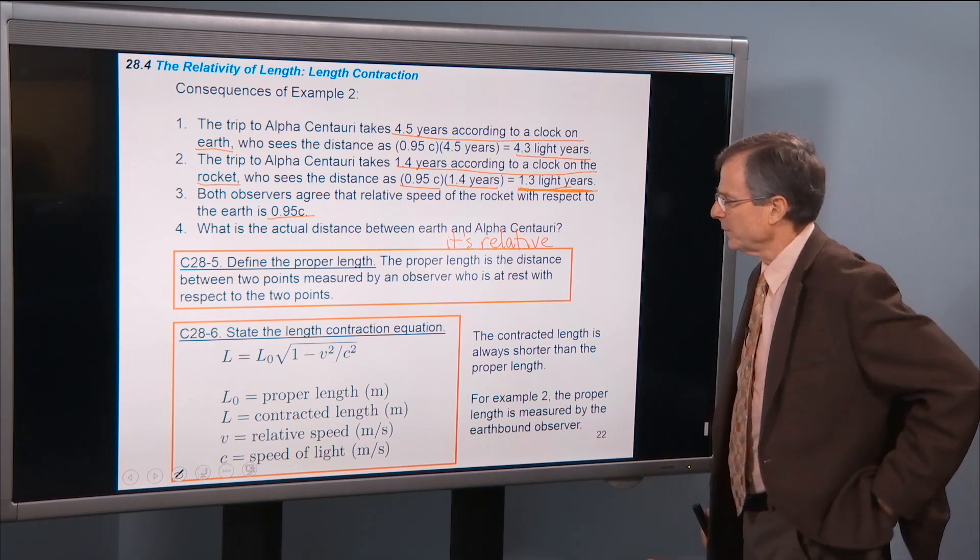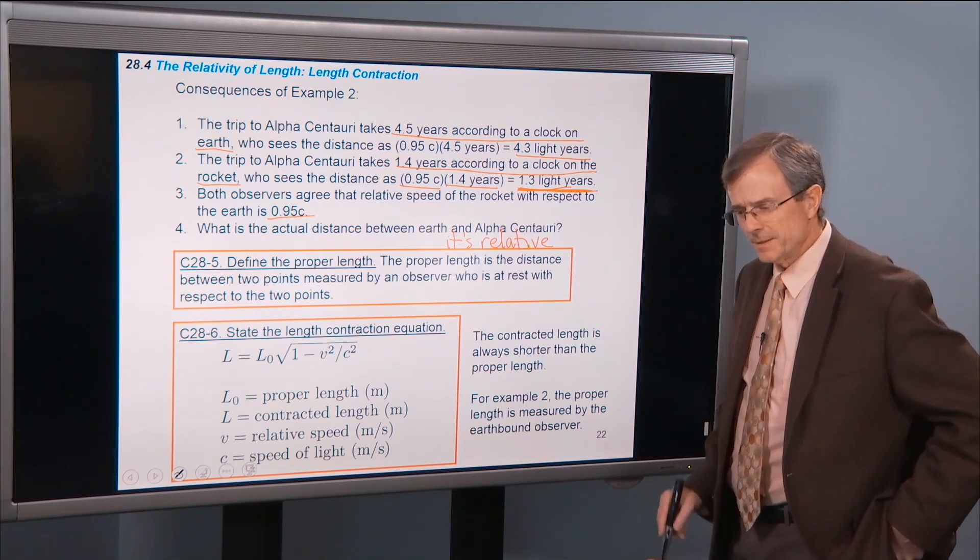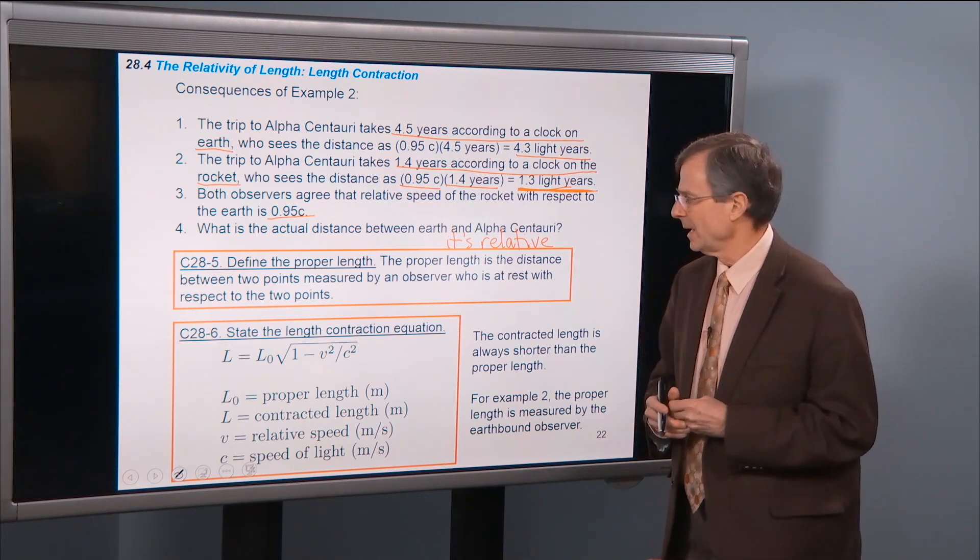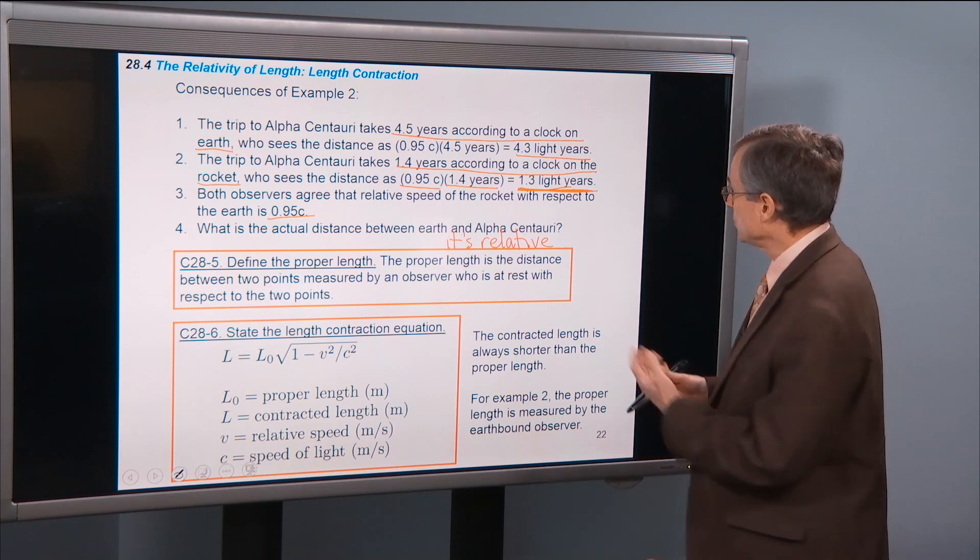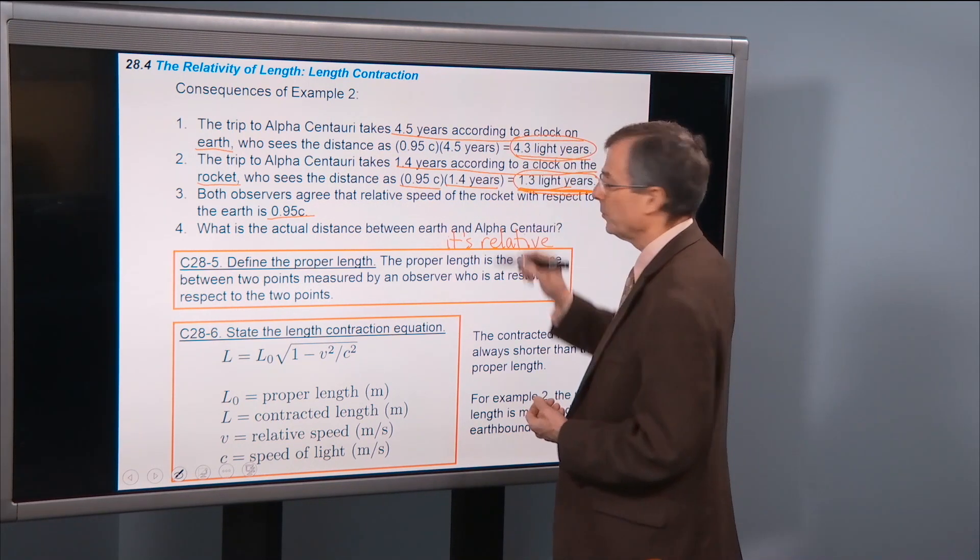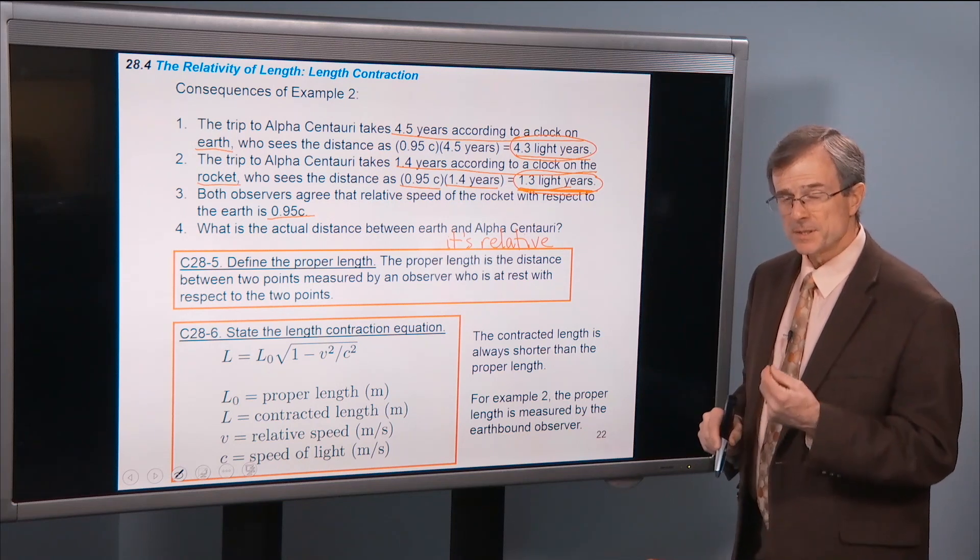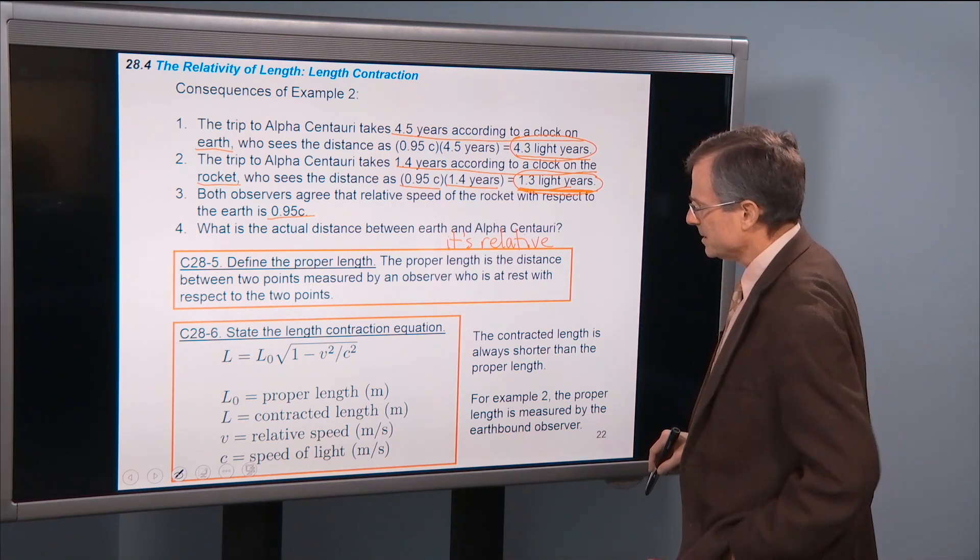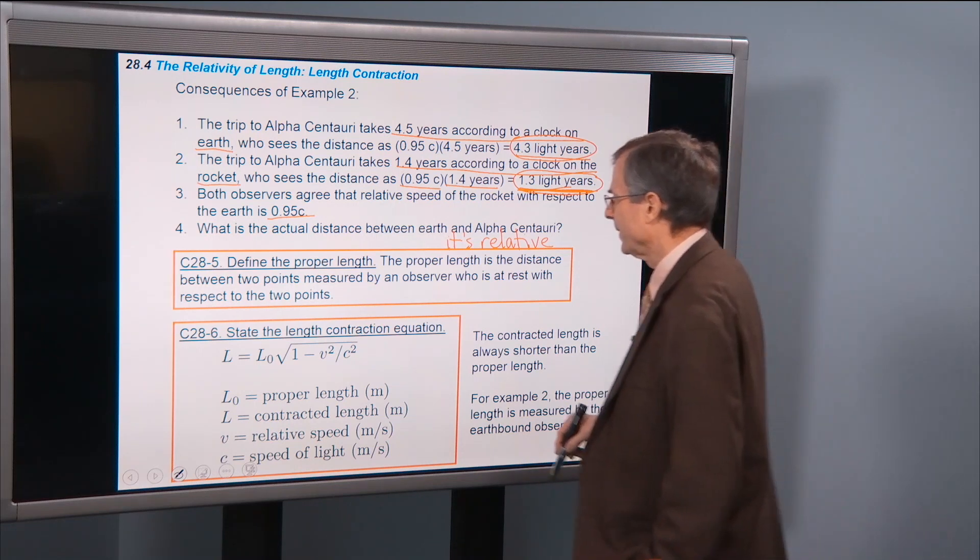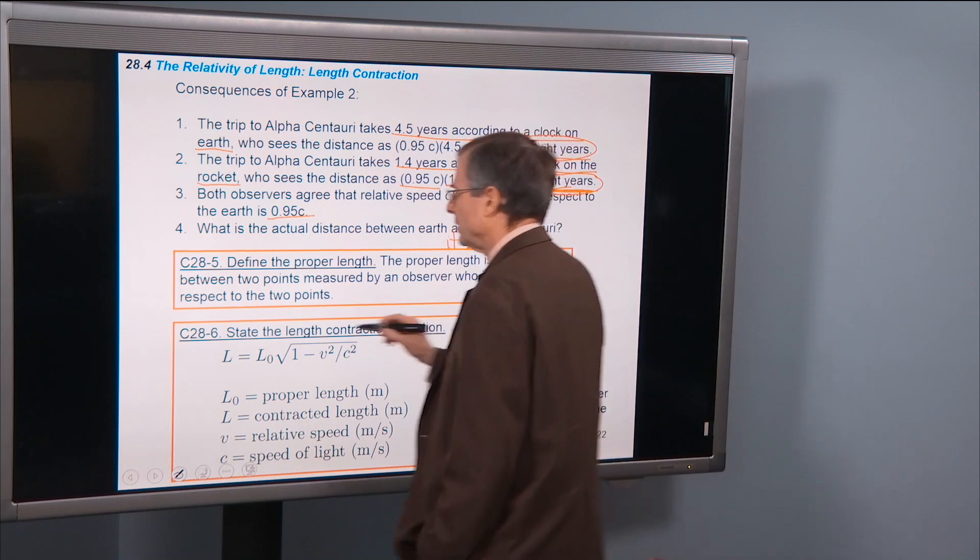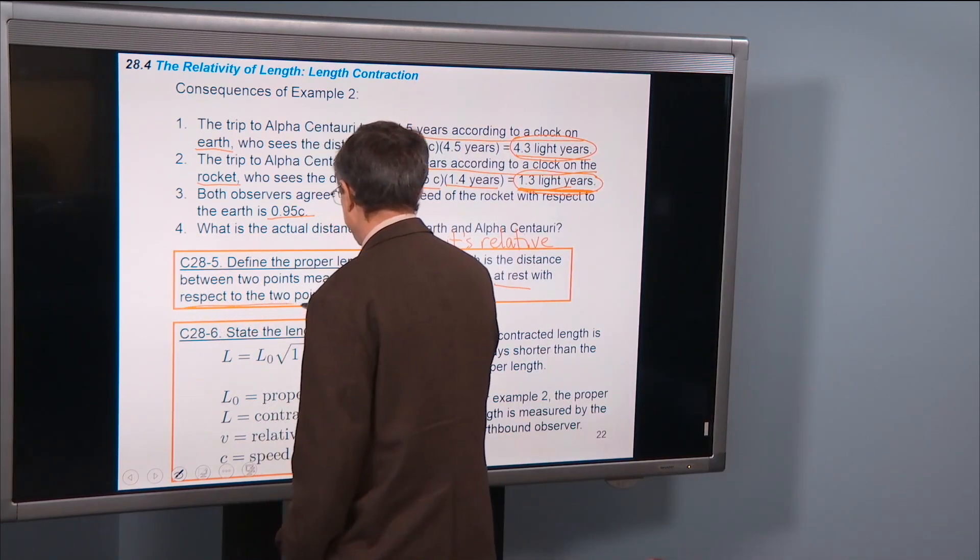So let's define the proper length. This is a subtle difference, it's not defined the same as proper time. The proper length. So which one's right? Which one of these lengths is correct? Well, neither one. But there is such thing as a proper length, and it's defined as the distance between two points measured by an observer who is at rest with respect to the two points.